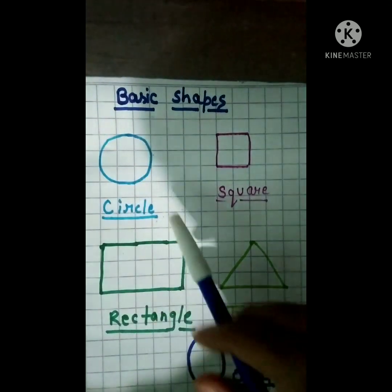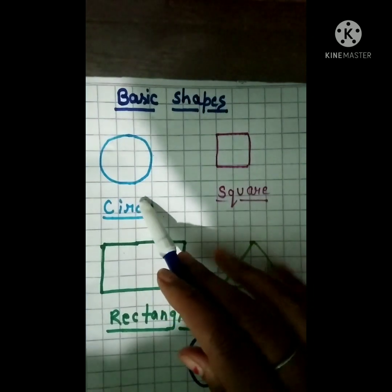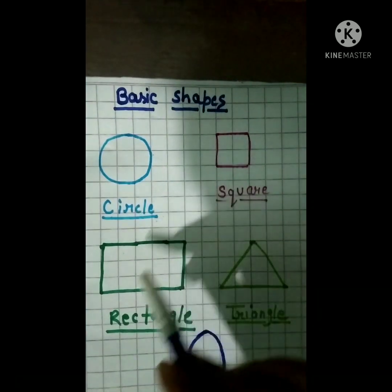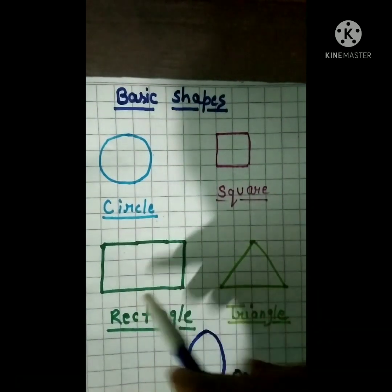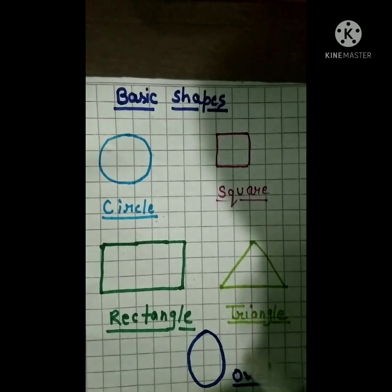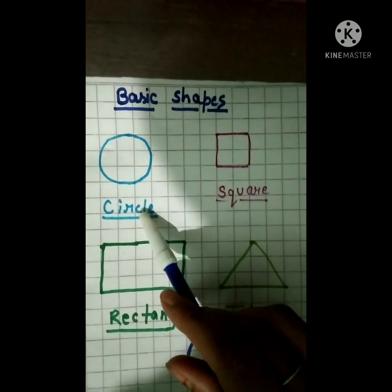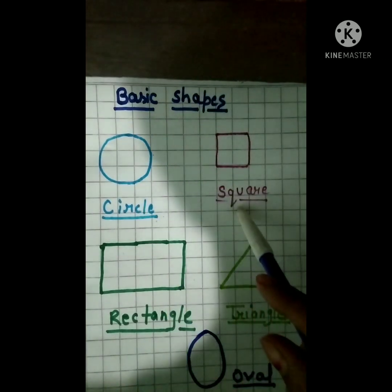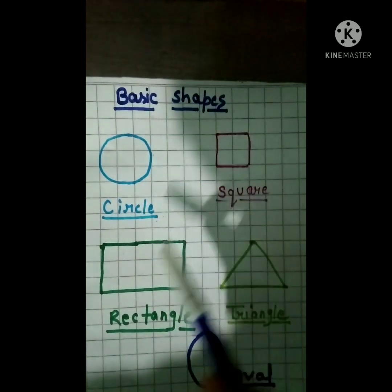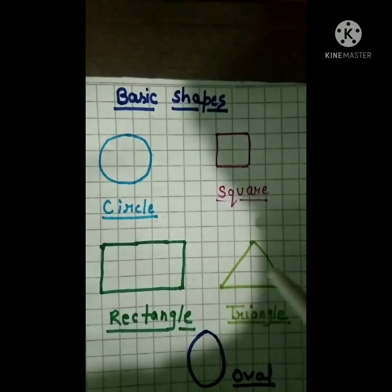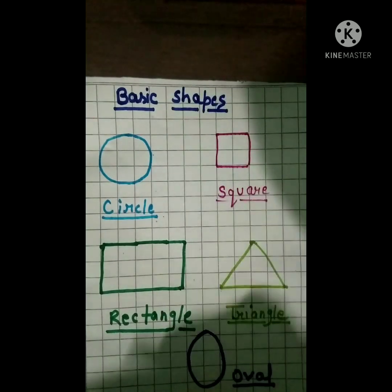Again, repeat with me: circle, square, rectangle, triangle, oval. Circle, square, rectangle, triangle, oval. Very good!